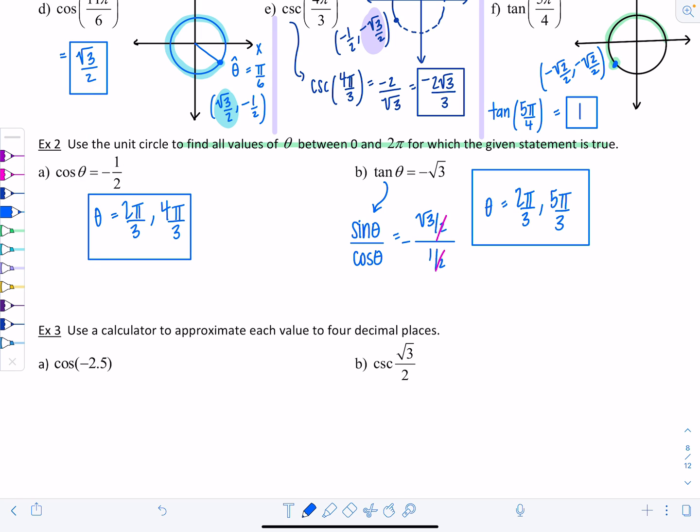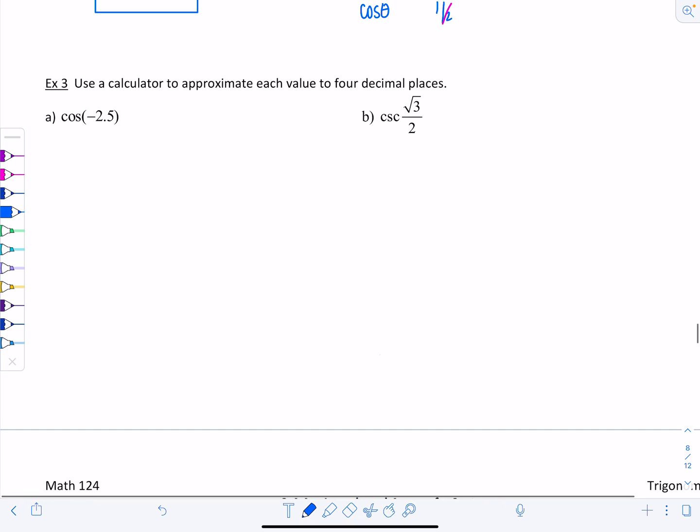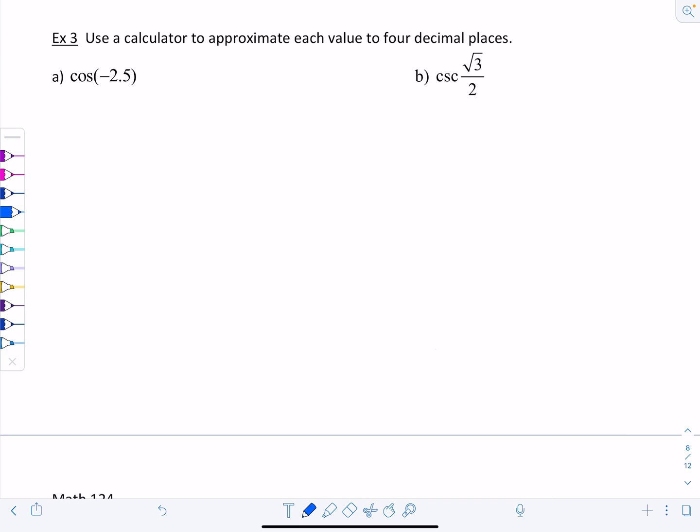We finally get to switch our calculators out of degree mode into radian mode. Use a calculator to approximate each value to four decimal places. Notice each of these angles doesn't have a degree sign next to it. So put your calculator in radian mode. Mine has this key at the top that says DRG. I push that, scroll over to where it says RAD, and hit enter. Now it says RAD in the bottom of my screen. You should see a little R or RAD so you know you're in radian mode. Punch in cosine of negative 2.5, round to four decimal places. You should have negative 0.8011.